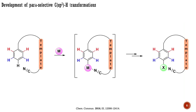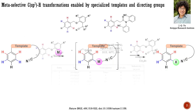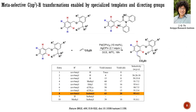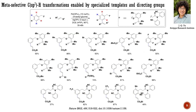Except meta-functionalization, the strategy based on the use of specialized templates and directing groups was recently extended to para-CH functionalization of aromatic systems. Now, let's briefly go through some specific examples. The template strategy for meta-CH activation was developed by the group of Yu at the Scripps Research Institute. Their initial paper was published in 2012. They have developed two directing groups, both suitable for palladium-catalyzed meta-CH olefination. A short optimization was required for this directing group, eventually indicating that the best meta-selectivity can be achieved when R is n-butyl, isobutyl, or tert-butyl groups, respectively. The substrate scope is presented here. The reaction works well for a wide range of substrates, producing corresponding meta-olefination products in good yields.